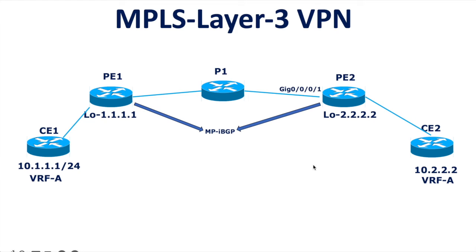Let's say if you create an MPBGP session between the PE1 loopback interface 1.1.1.1 and the PE2 physical interface IP configured on GigabitEthernet 0/0/1, the MPBGP session will still come up. But why are we not creating it to any physical interface, and why do we always do the peering between the local and remote PE routers to the loopback interface? That is the question.